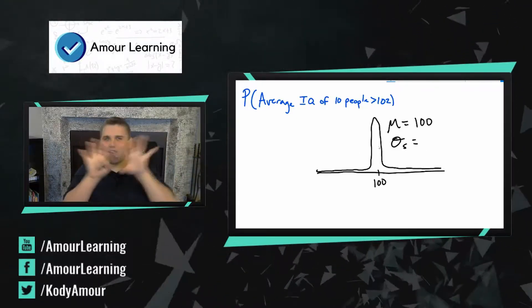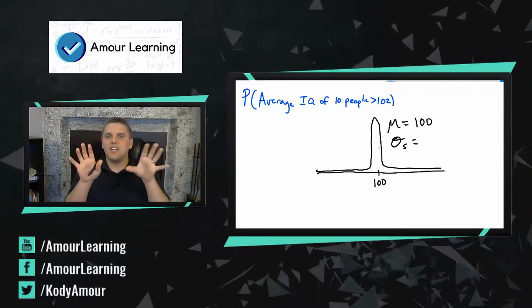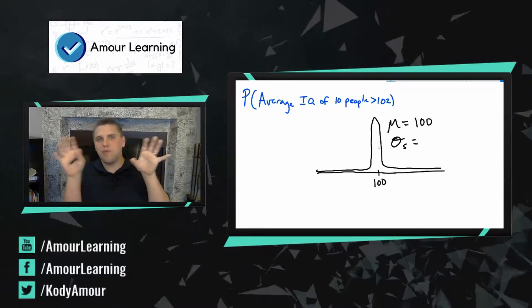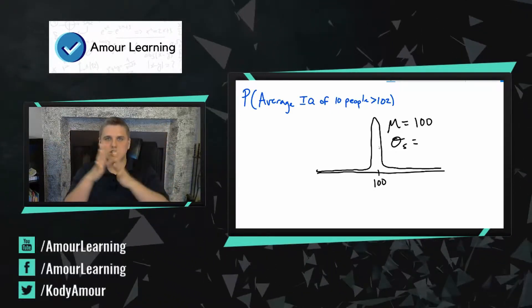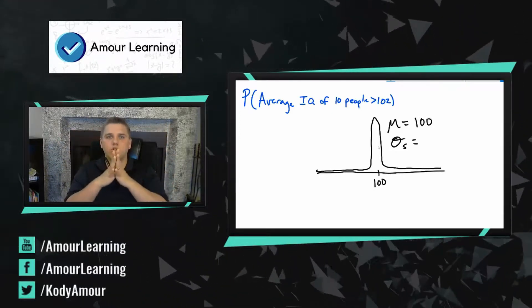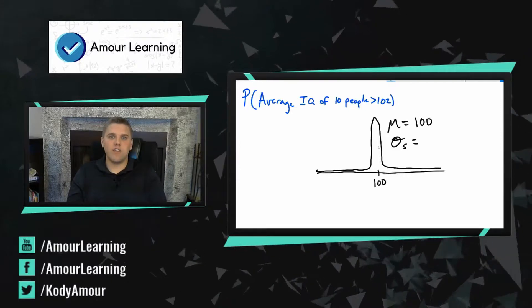Again, to give another understanding of this, the idea is the people with the higher IQs wash out the people with the lower IQs, and so you should see an average that's really close to 100. And so this standard deviation is much smaller.